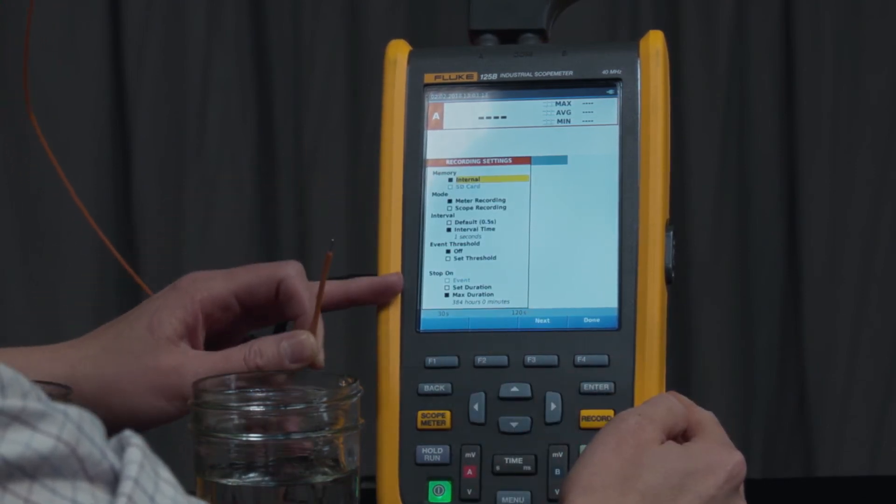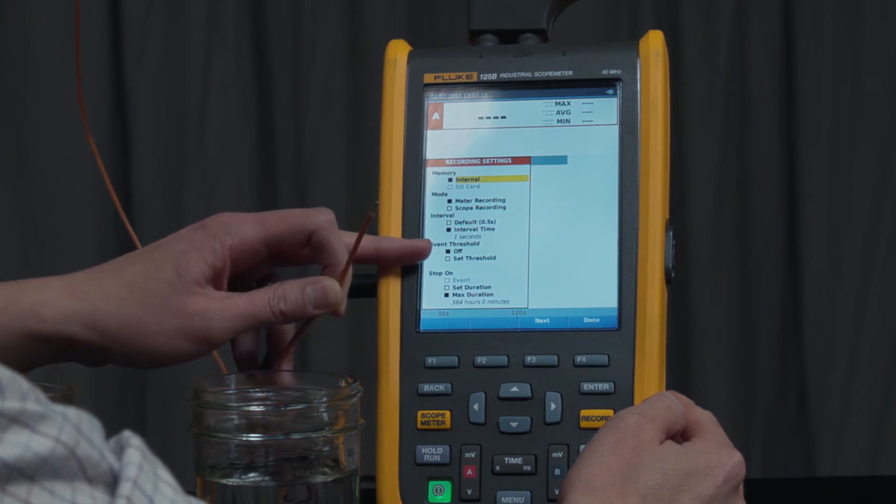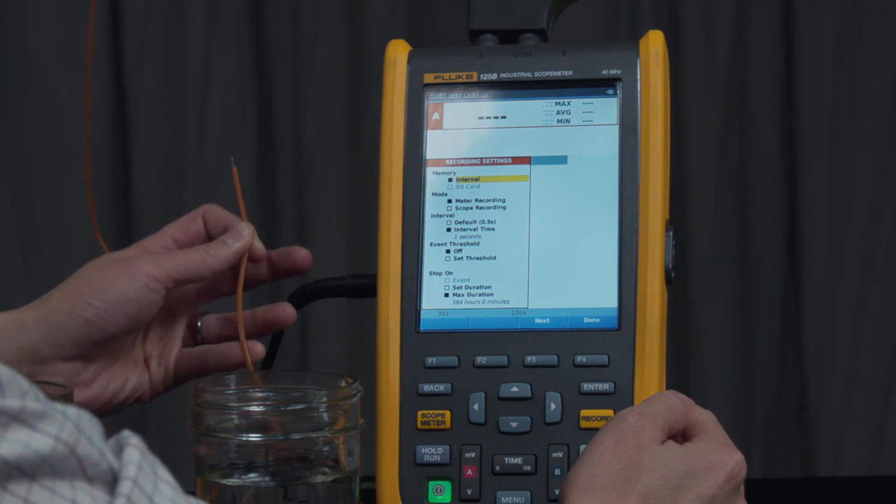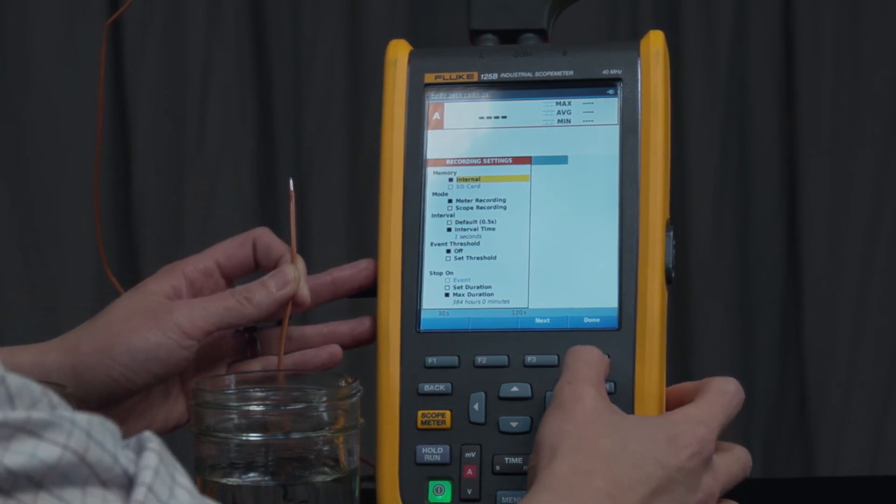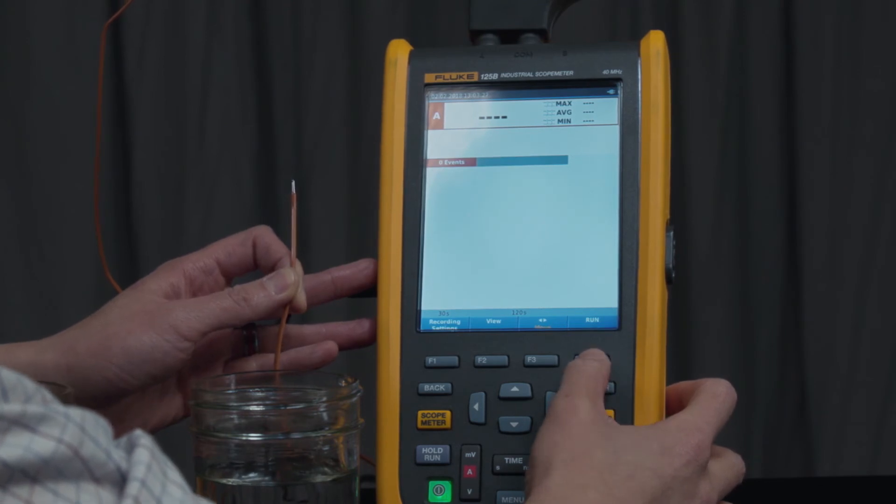In here, we'll leave everything the same. Notice I've changed event threshold to off, which means that now anytime there's a new minimum and maximum, you'll hear a beep. We'll press done, and then F4 to run.